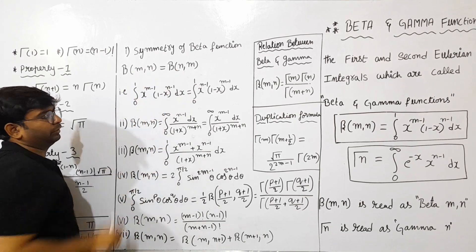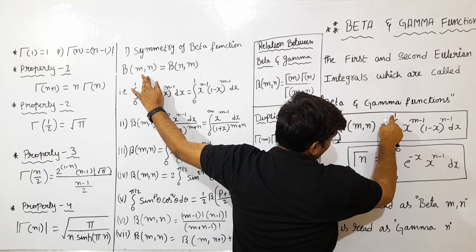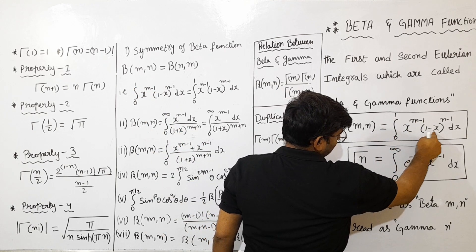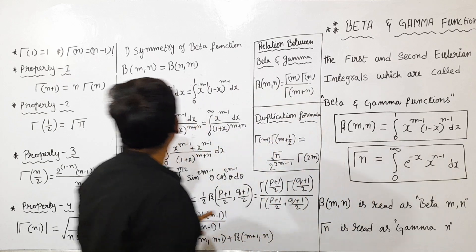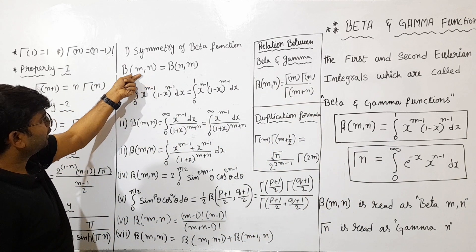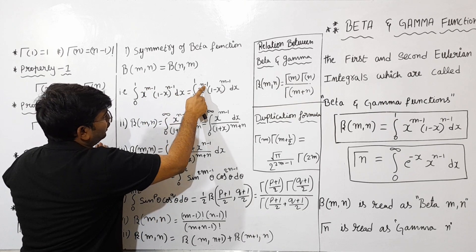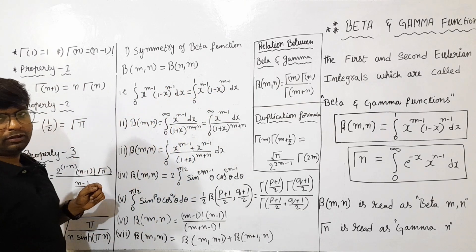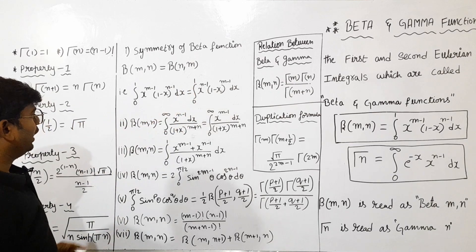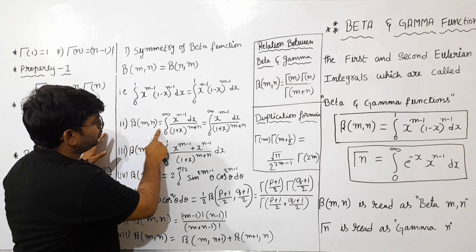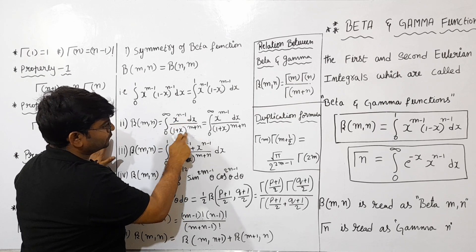Beta(m,n) and Beta(n,m) are equal — that is the symmetry. In the second property of Beta, Beta(m,n) is equal to the integration from 0 to 1 of x to the power of m minus 1 into (1 minus x) to the power of n minus 1 dx. Swapping m and n confirms symmetry. The second property is Beta(m,n) equals the integration from 0 to infinity of x to the power of m minus 1 dx by (1 plus x) to the power of m plus n.